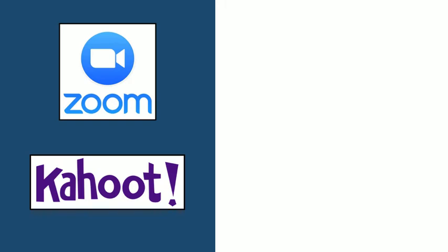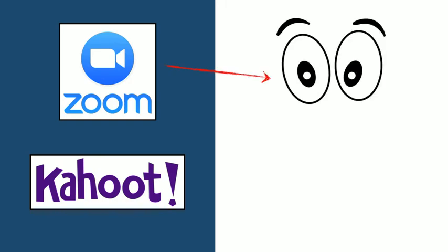For trivia programs, we use two separate programs: Zoom and Kahoot. As many of you already know, Zoom is a virtual meeting program where participants can see and talk to one another. This is an important part of the social aspect of trivia. Additionally, Zoom will allow you to see all the trivia questions and answers.